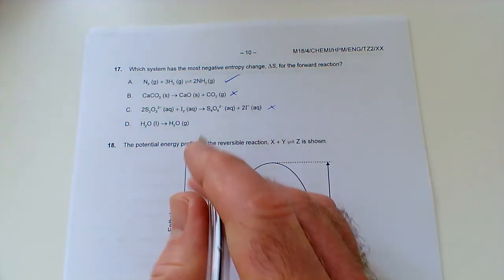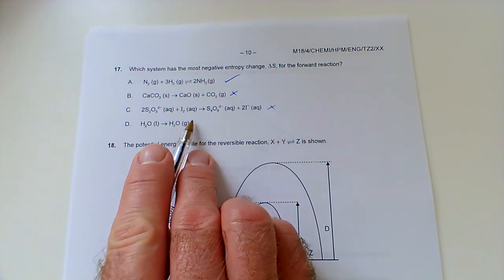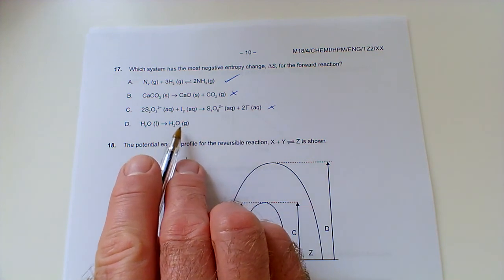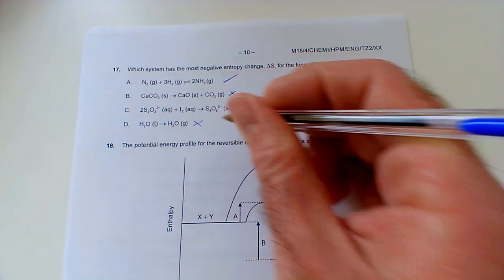This one we've got a liquid becoming a gas. Again, if you get a gas being created, that's a big positive change in entropy, so it won't be this one. So we're going to go with A.